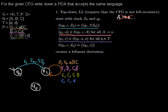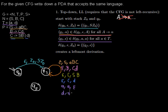For every terminal that we have, we want to read the terminal from the input string and read the same terminal from the stack. For example, I have terminals a and d. I read a from the input and a from the stack — it's a transition from q1 to q1, and we push nothing. The same for terminal d: read d from the input, read d from the stack, and push nothing.